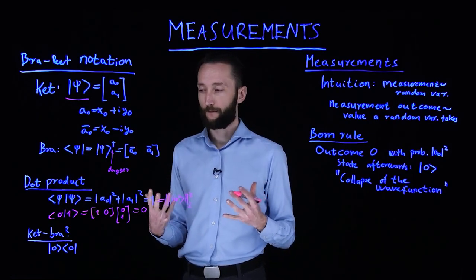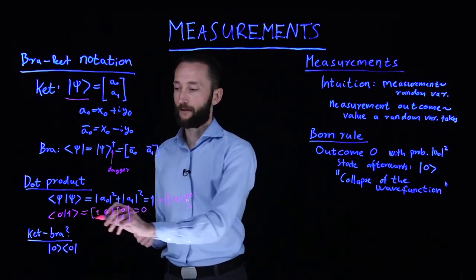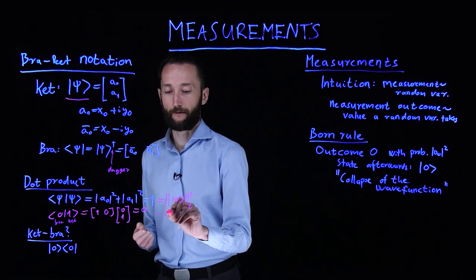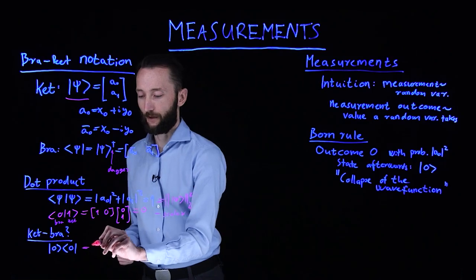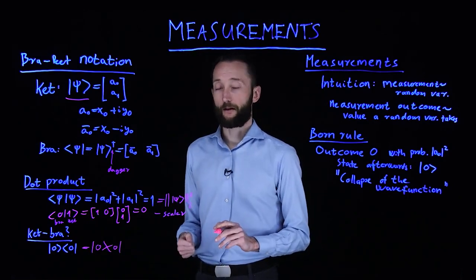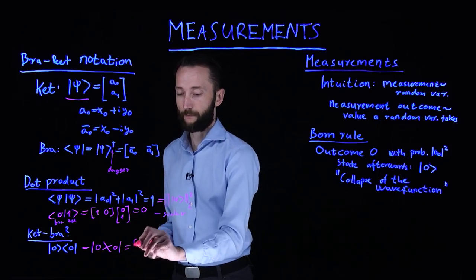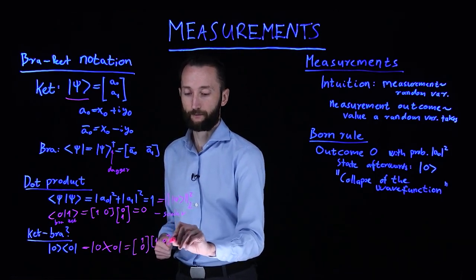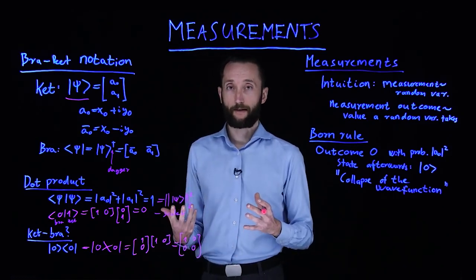So what if we take the other order, so we take the ket and the bra. You see, a bra and a ket gives you a scalar. But if you take a ket and a bra, which we also write in this form which is just easier to write, this is not going to be a scalar, this is going to be a matrix. In this case, you're multiplying this column vector with this vector, which is going to give you this matrix.